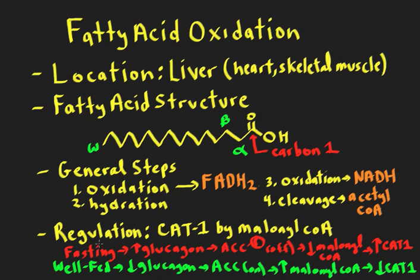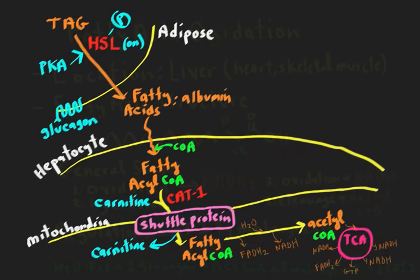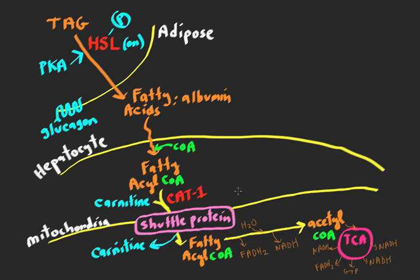Recalling from the fatty acid biosynthesis lecture: when glucagon is present and you're making lots of PKA and phosphorylating acetyl-CoA carboxylase, you turn off the enzyme, make less malonyl-CoA, and because malonyl-CoA goes down — since it's an inhibitor of CAT1 — CAT1 activity actually goes up. On the other hand, in the well-fed state, when glucagon is low, acetyl-CoA carboxylase is turned on, you have lots of malonyl-CoA, and CAT1 is turned off. During fasting, less malonyl-CoA in the cytosol means CAT1 is very active because acetyl-CoA carboxylase is turned off.